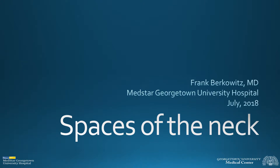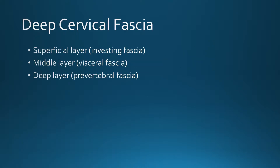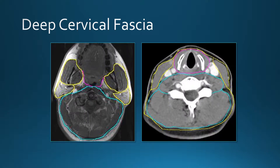I'm going to talk about spaces of the neck. We'll divide the neck into spaces based on the deep cervical fascia, then look at the anatomic structures and pathology in each space to make a differential diagnosis when we see a lesion. The deep cervical fascia has three layers: superficial, middle, and deep. In this picture the superficial layer is in yellow, the middle layer in magenta, and the deep layer in cyan.